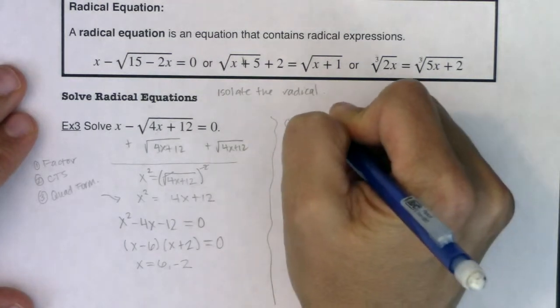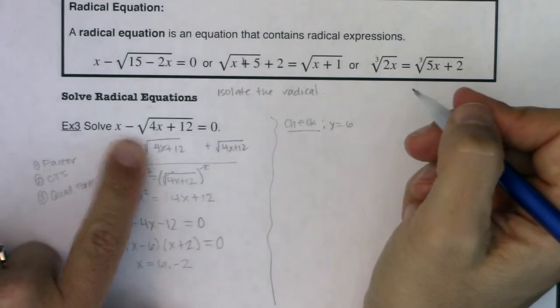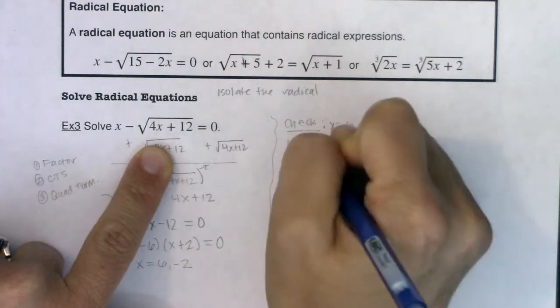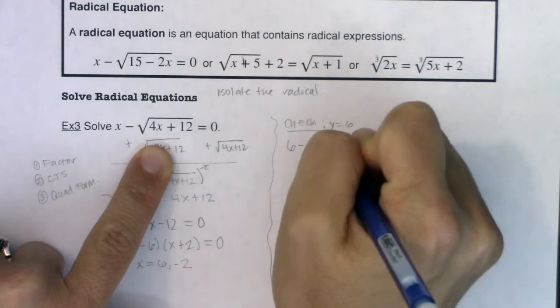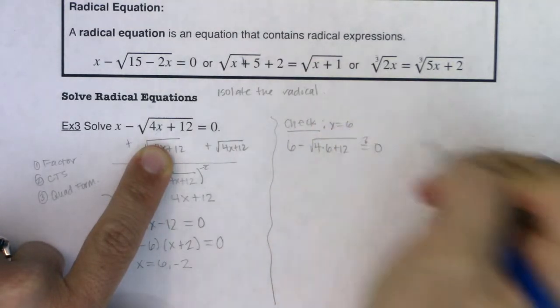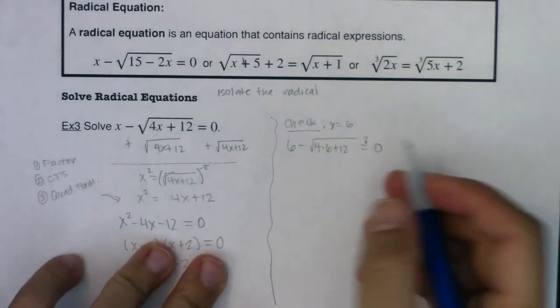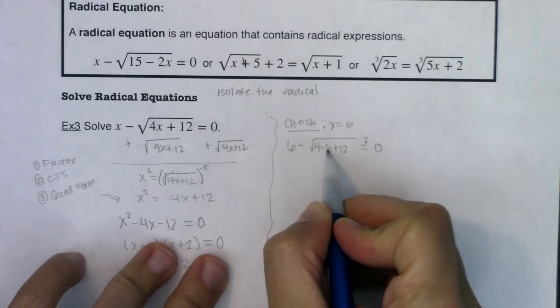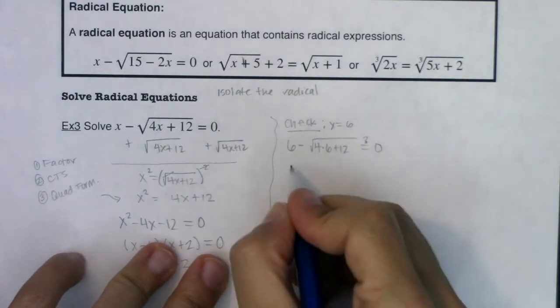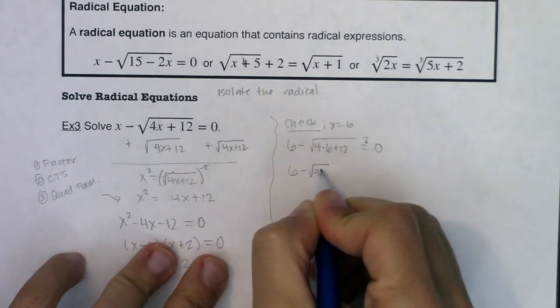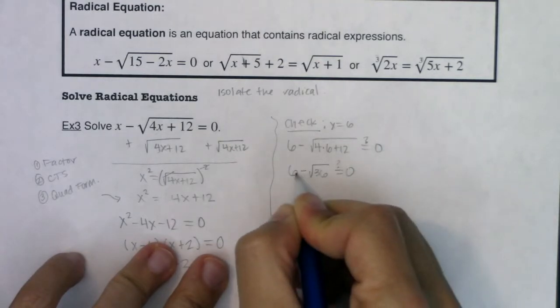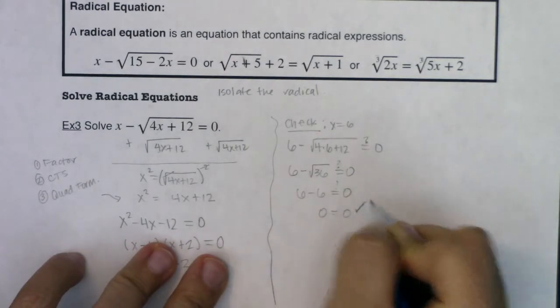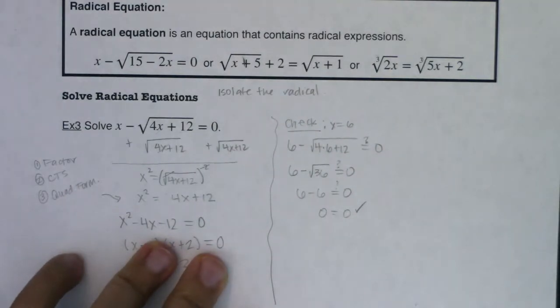Let's check x equals 6. I'm going to check it against my original equation. So I want to see is it true that 6 minus the square root of 4 times 6 plus 12 is equal to zero. I'm going to put a question mark over that equal sign for right now until I know one way or the other. So let's try this, 4 times 6 is 24. 24 plus 12 is 36. So I have 6 minus the square root of 36. Is that equal to zero? Well, is 6 minus 6 equal to zero? It sure is. 0 is equal to zero. That answer checks out. Great. Fantastic.